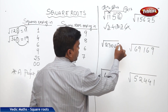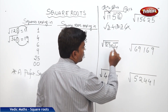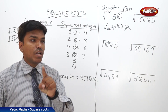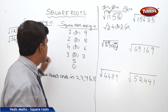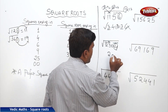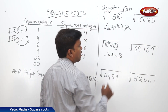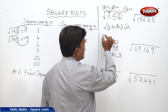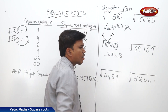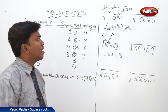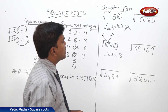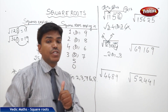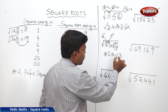Now we will do the second example in the same way. First, make a partition of 2 digits from the right side. This is the first partition, and this is the second partition. The square number is ending in 4, so the square root should end in 2 or 8. My answer should end in 2 or 8 with a blank on the left side. Now come to the second partition: 23. 23 comes between 4² and 5². The left blank is always filled with the lesser number, which is 4. So my answer is either 42 or 48.